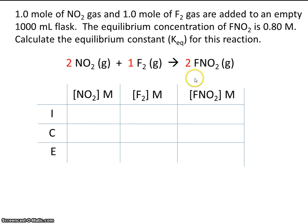Okay, let's plug in what we know. It says that one mole of nitrogen dioxide and one mole of fluorine gas are added to an empty 1,000 milliliter flask. So we're putting one mole in one liter, and then one mole in one liter. The concentration would be one mole per liter, so that's one molar. Initially, we have no product formed, so that will be zero. And it tells us the equilibrium concentration for FNO2 is 0.8 molar.